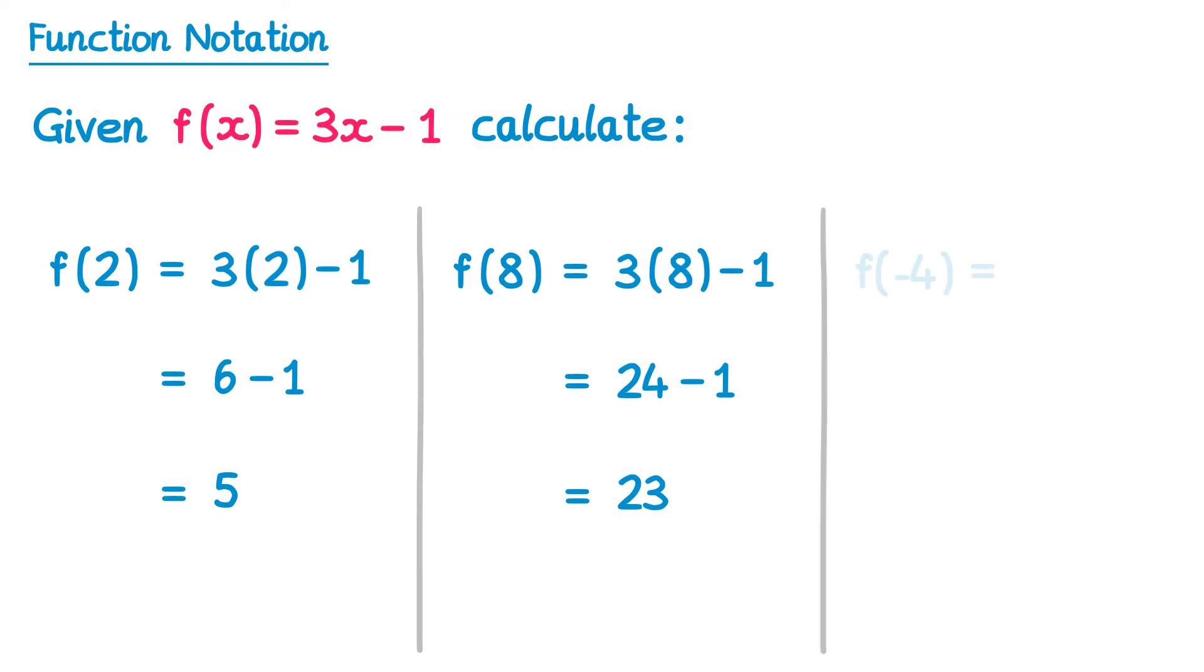And then the final question, f of negative 4. So we'll write down the output again. 3x minus 1 but change the x's to brackets. So 3 bracket minus 1 and inside the bracket we'll put that negative 4. So we have 3 times negative 4 which is negative 12 and then take away 1. Negative 12 take away 1 is negative 13.